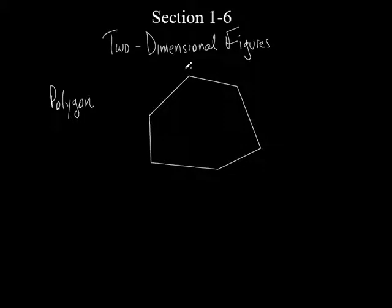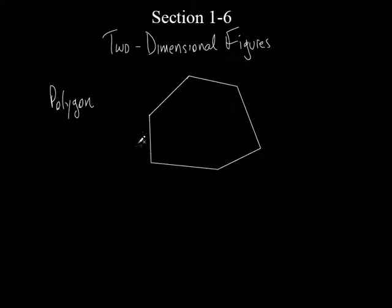So if you have line segments and they're all connected at each endpoint, then you've got basically a polygon. What does that prefix poly mean? Many, right. And the -gon kind of means angles in geometry. So many angles. And it does — it's got many angles. So that's a polygon.